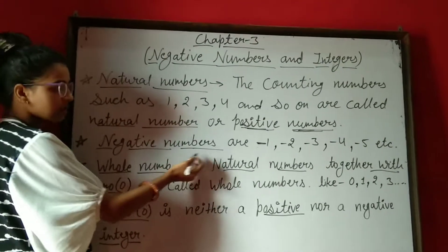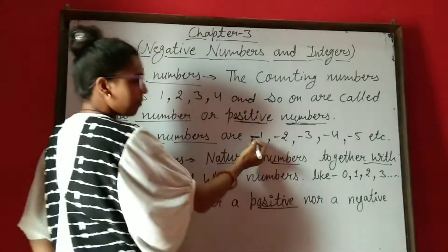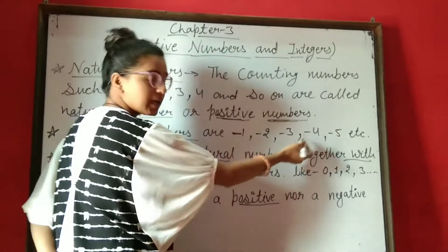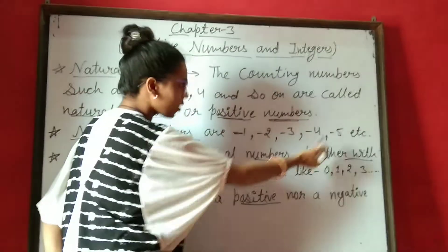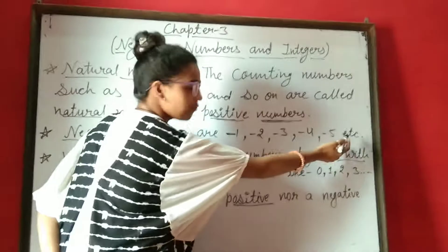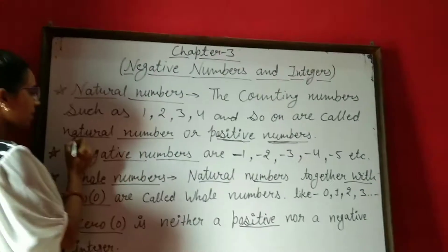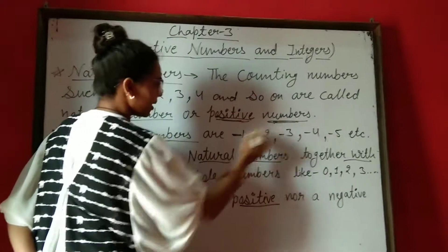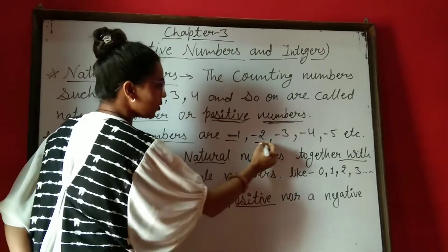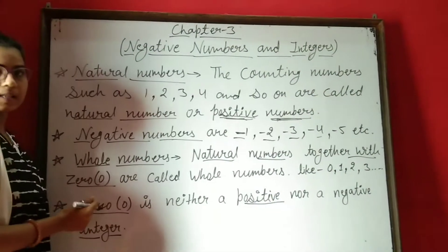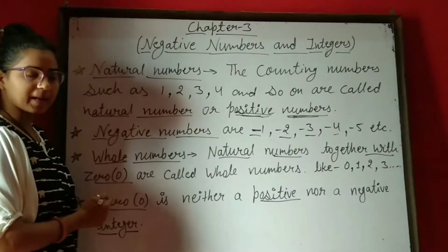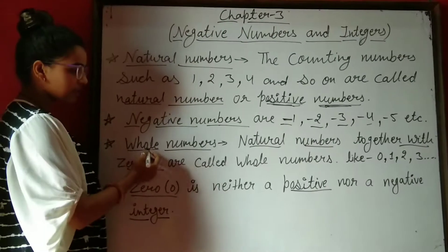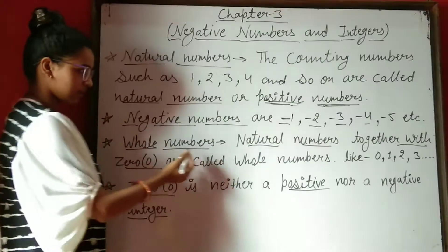Negative numbers are minus 1, minus 2, minus 3, minus 4, minus 5, etc. Means अगर आप positive numbers के आगे minus sign लगा देते हो, तो आपके negative numbers बन जाते हैं. Next topic is whole numbers.